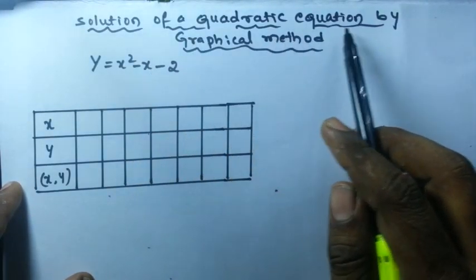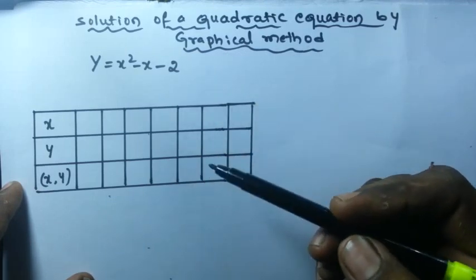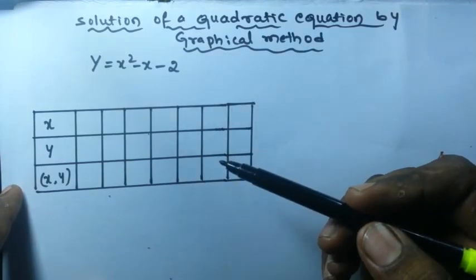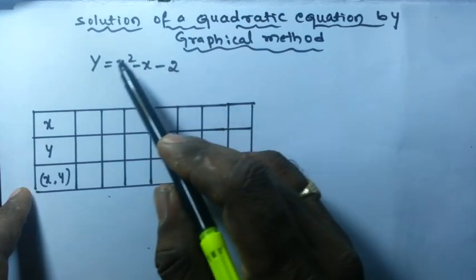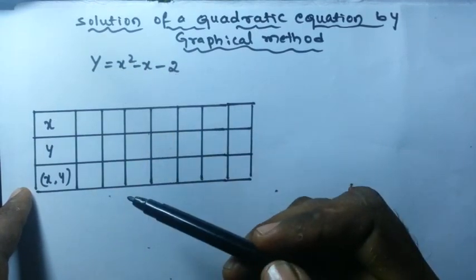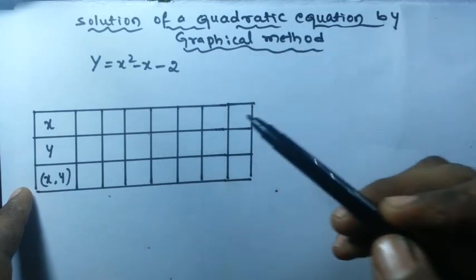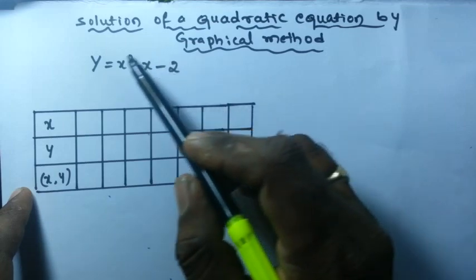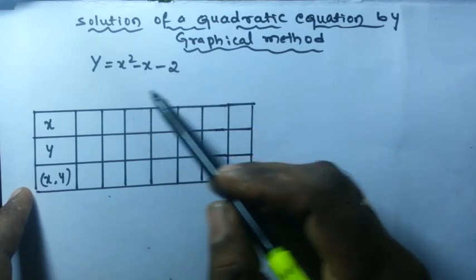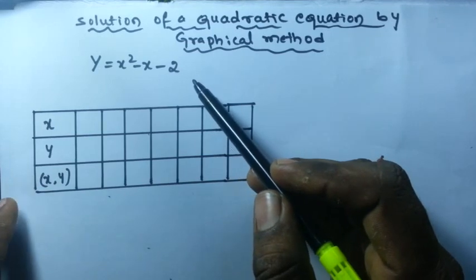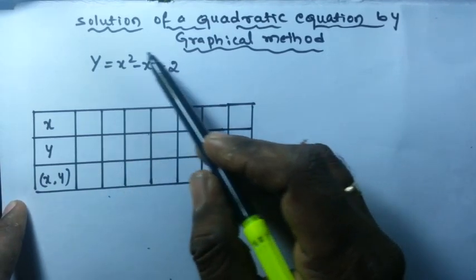Solution of quadratic equation by graphical method. You know that there are different methods to solve the quadratic equation or to find the roots of the quadratic equation. The graphical method is also one of the methods to find the roots of the quadratic equation. To find the roots by graphical method, first find the coordinates of this equation.